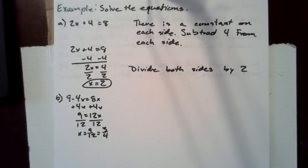Likewise, if we have 9 minus 4x equals 8x, we can add 4x to both sides of the equation. That leaves 9 on one side and 12x on the other. Dividing both sides by 12, we get x equals 9 twelfths, which is equal to 3 fourths.